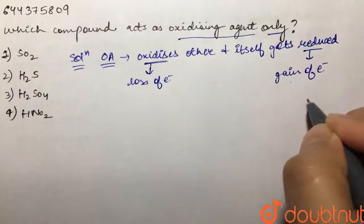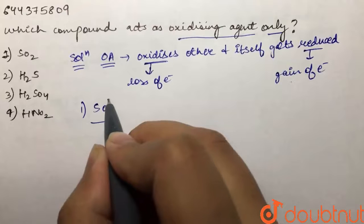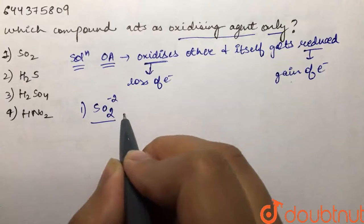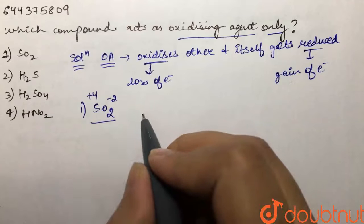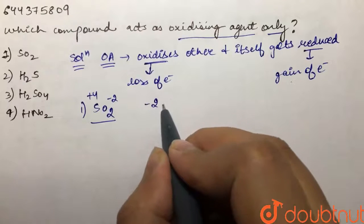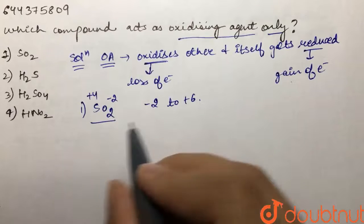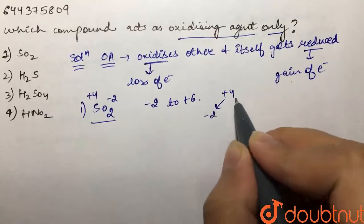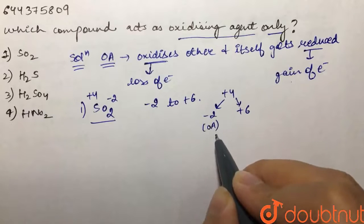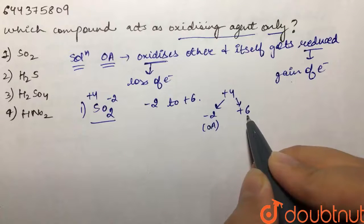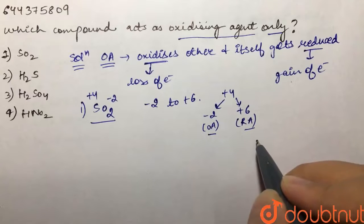For the first option, SO₂: oxygen has a -2 oxidation state, and we have 2 oxygens, so sulfur has a +4 oxidation state. The possible oxidation states for sulfur range from -2 to +6. Since sulfur is at +4, it can go to -2 (getting reduced, acting as oxidizing agent) or to +6 (getting oxidized, acting as reducing agent). So SO₂ can act as both oxidizing and reducing agent — not our answer.